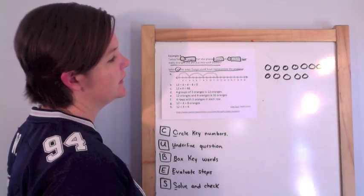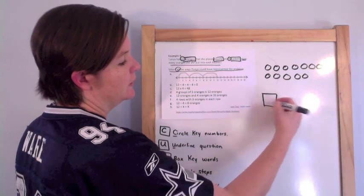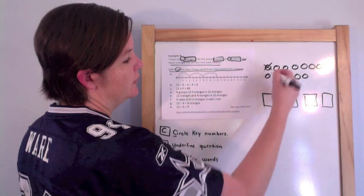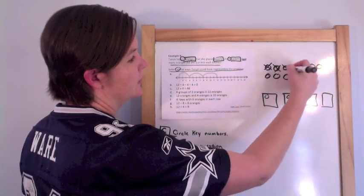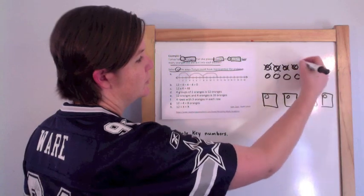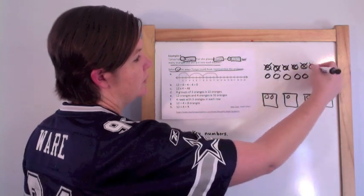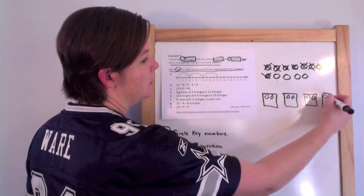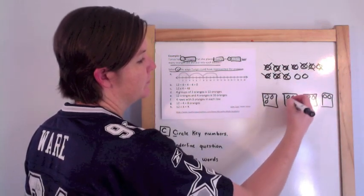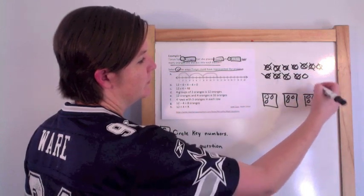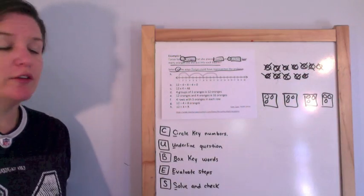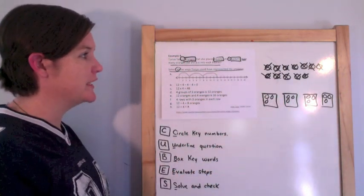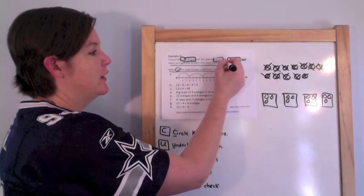Twelve oranges placed equally into four baskets. So I've got four baskets with three in each. How many oranges did she put in each basket? Three. Now I need to figure out which answer choices work. This is a multi-select problem, so I need to select all correct answers — if I don't get them all, I don't get the point.